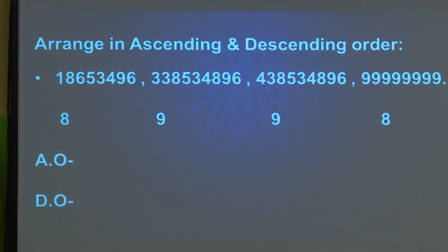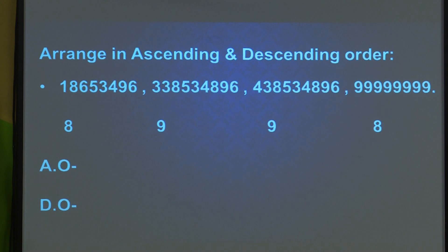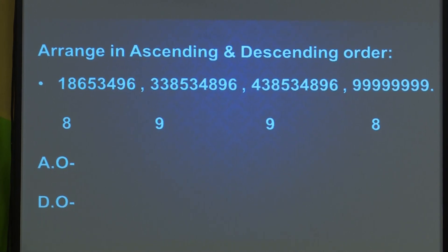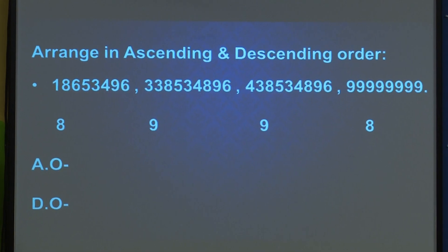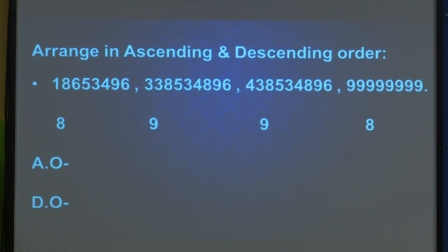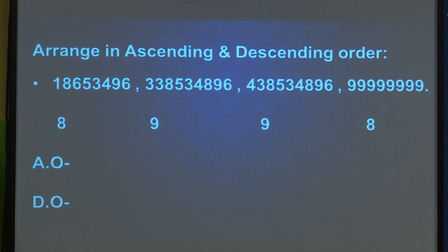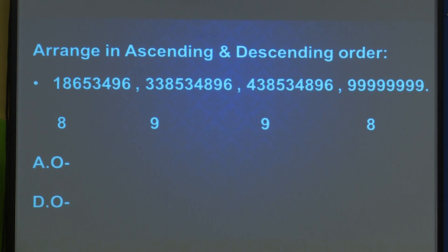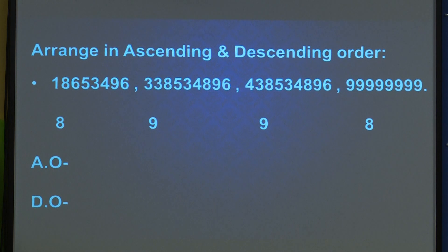We have one or two examples here. Arrange in ascending and descending order. The numbers given have to be arranged once in ascending and once in descending order. You might be thinking why the teacher has written 8-9-9-8. What I have done is counted the number of digits in each number and written the digit count below each. So the first number is an 8-digit number, second is 9-digit, third is 9-digit, and fourth is 8-digit.